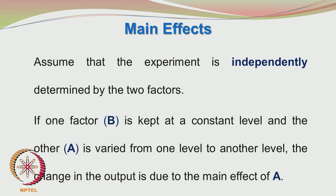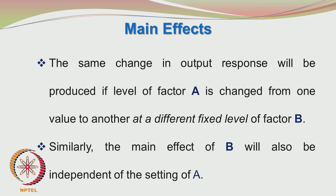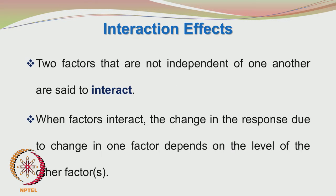If one factor B is kept at constant level and A is varied from one level to another, the change in output is due to the main effect of A. The same change in output will be produced if A is changed at a different fixed level of B — that is when the 2 factors do not interact. However, when factors interact, the change in response due to change in one factor depends on the level of the other factors.